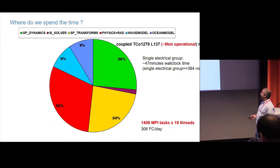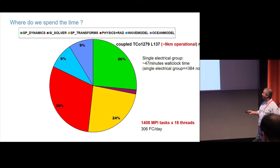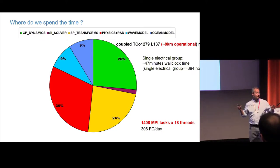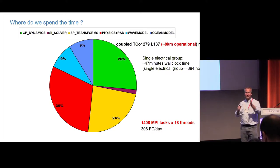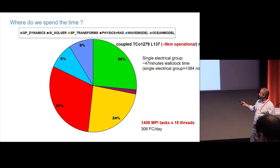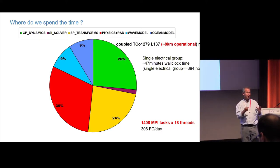Where do we spend the time? In our current operational forecast, 30% is in physical parameterizations, 24% in spectral transforms, a small amount in the solver, 26% in grid-point dynamics — the advection and non-linear wave interactions expressed as V·∇V. Because of the Earth system aspect, 9% is in the wave model and 9% in the ocean model, so substantial cost is already in other Earth system components.